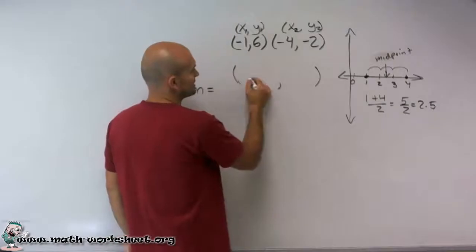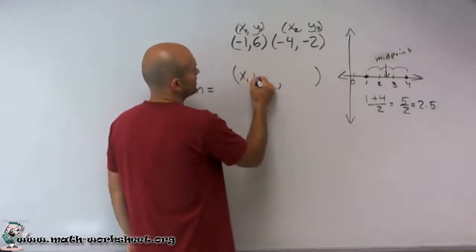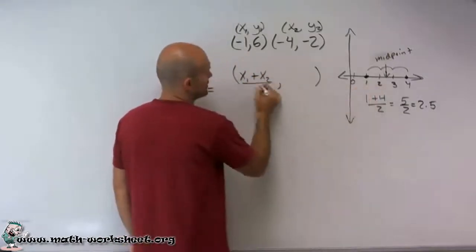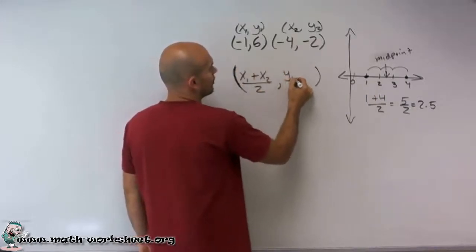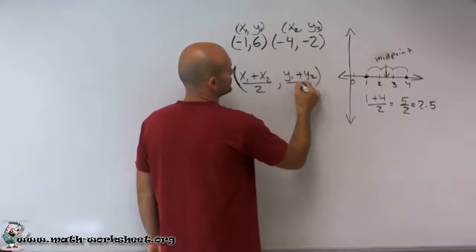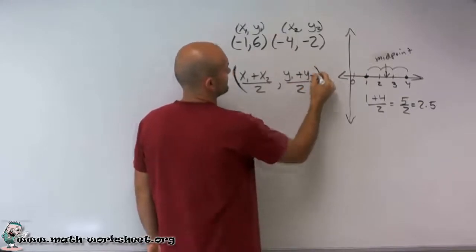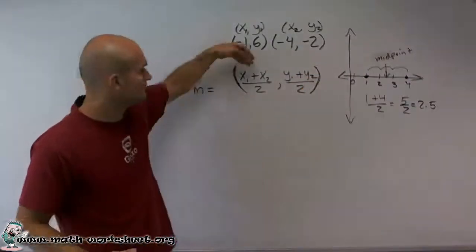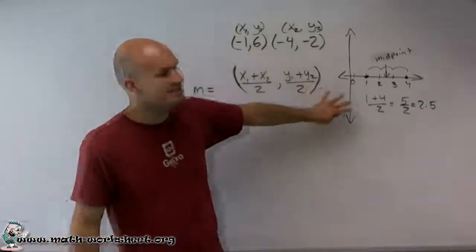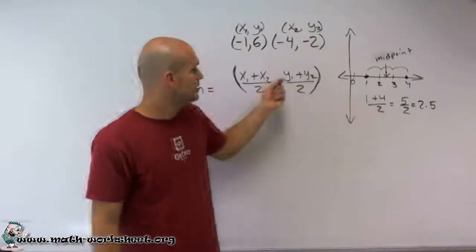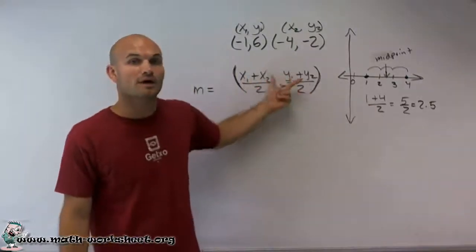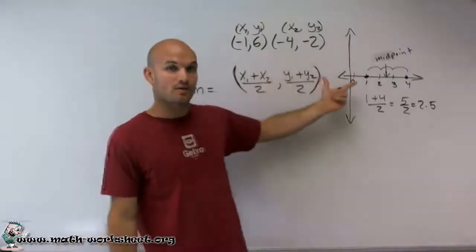So I'm going to write up what the formula looks like. And it looks something like this. x1 plus x2, just like I did here, divide by 2, comma, y1 plus y2, divide by 2. So therefore, you can see what I've done now is I pretty much did this for a linear case, but I pretty much did the exact same thing here. But now I did it for both values, the x coordinates and the y coordinates.